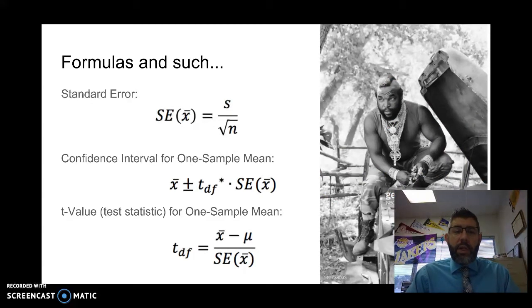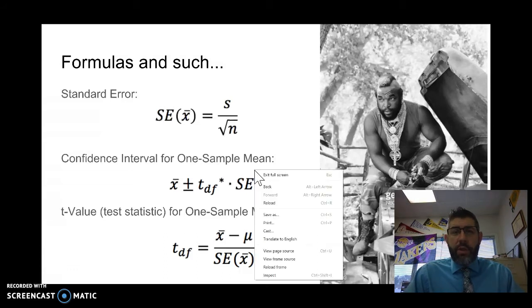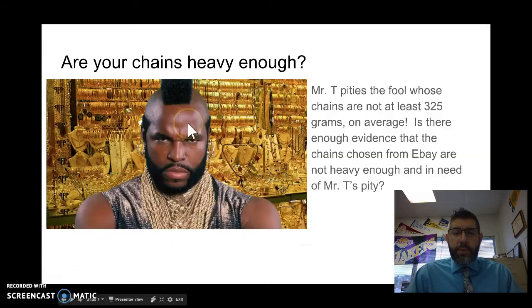These are some of the formulas that you'll need. The standard error, s over root n, and the confidence interval, x-bar plus or minus the t-star, or the t that aligns with your confidence interval with the degrees of freedom. That's easiest if you use a t-table, and then we're going to multiply that by our standard error. And then when we're looking for our t-statistic in our hypothesis test, we're going to have x-bar minus mu over the standard error.